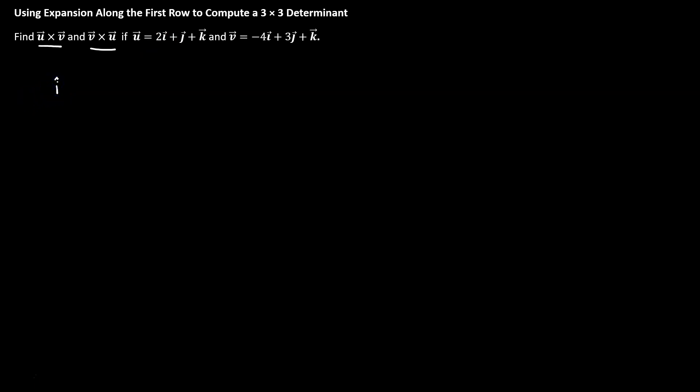We'll start by setting up our 3x3 matrix. i hat, j hat, k hat, they all go in the first row every single time, doesn't matter what the vectors look like.